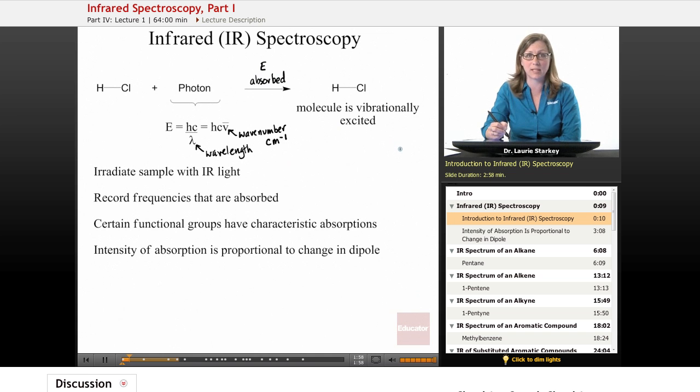We say that the molecule becomes vibrationally excited. Now what does that mean? Well, here we have a hydrogen-chlorine bond, so the only motion that can happen is this chlorine can move closer and away from the hydrogen. So we call that stretching of the bond, it stretches and compresses, and that molecular vibration is the result of absorption of IR light.